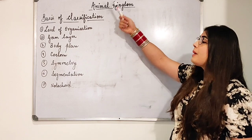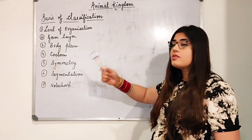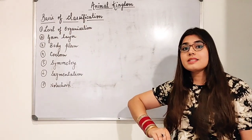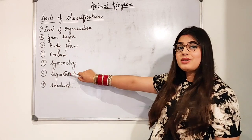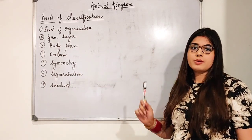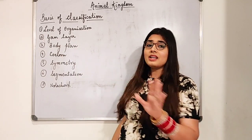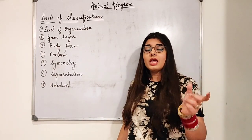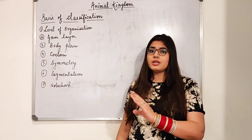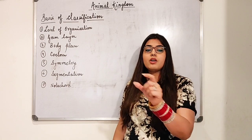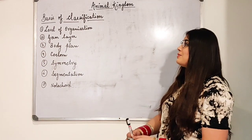Similarly, in Kingdom Animalia, classification can be done on various factors — level of organization, germ layers, body plan, symmetry, segmentation, and notochord. We will study each of these one by one in detail. In biology, if there is a difficult word in front of you, break it into two or three parts, find the meaning of each part, and you'll get your answer. It's as simple as that.